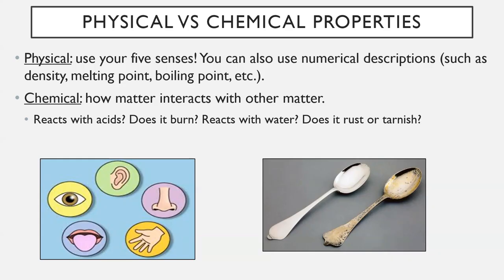Chemical properties, on the other hand, are how matter interacts with other matter. If you mix this piece of matter with something else, what's going to happen? Examples include: does it react with acids? Does it burn? That's a chemical property — some things cook or melt when heated, while others straight up burn. Does it react with water? Things on the far left side of the periodic table have quite an explosive reaction with water. Does it rust or tarnish? Silver, for instance, will tarnish if it sits in air long enough — that's a chemical reaction happening with the air.